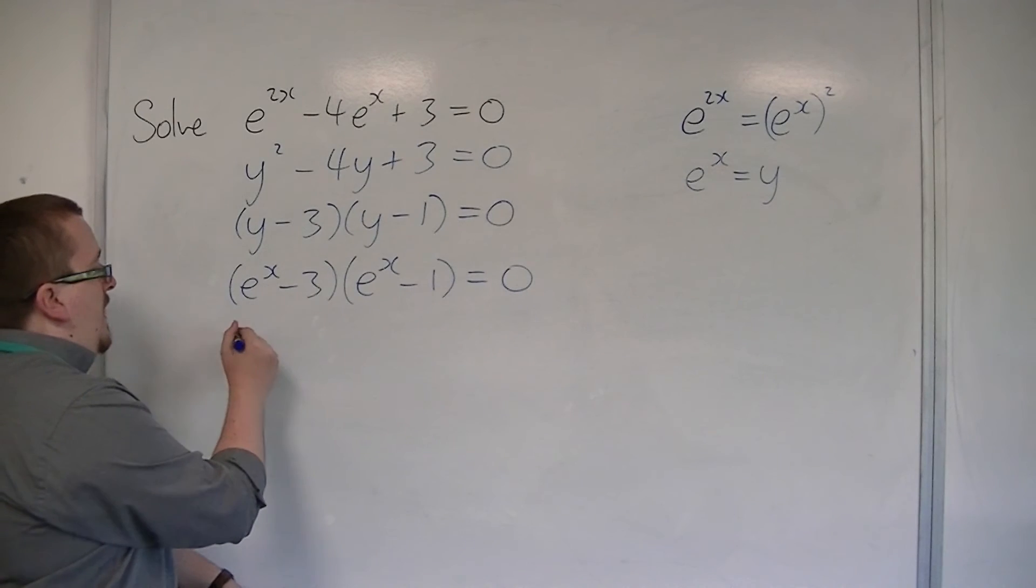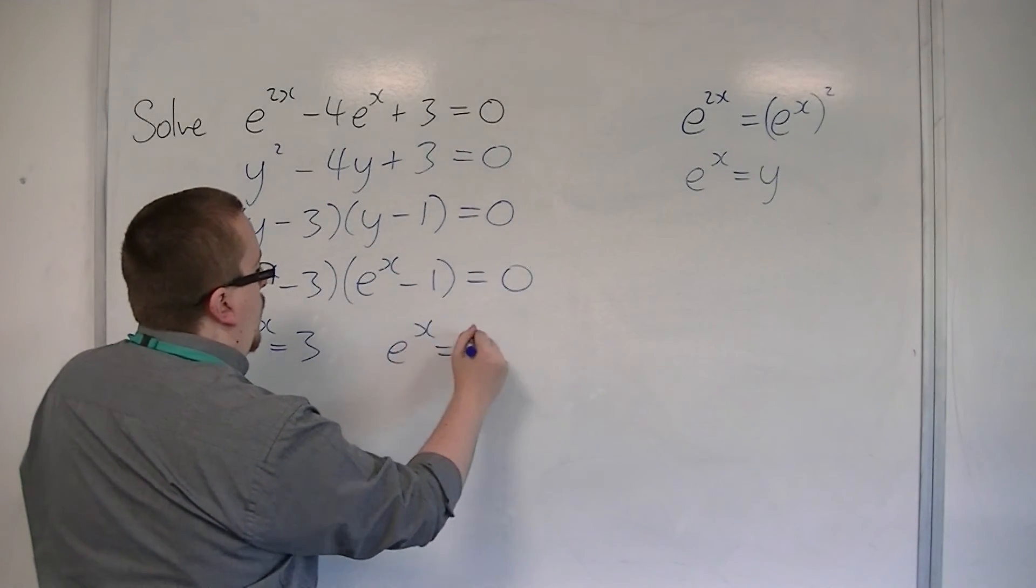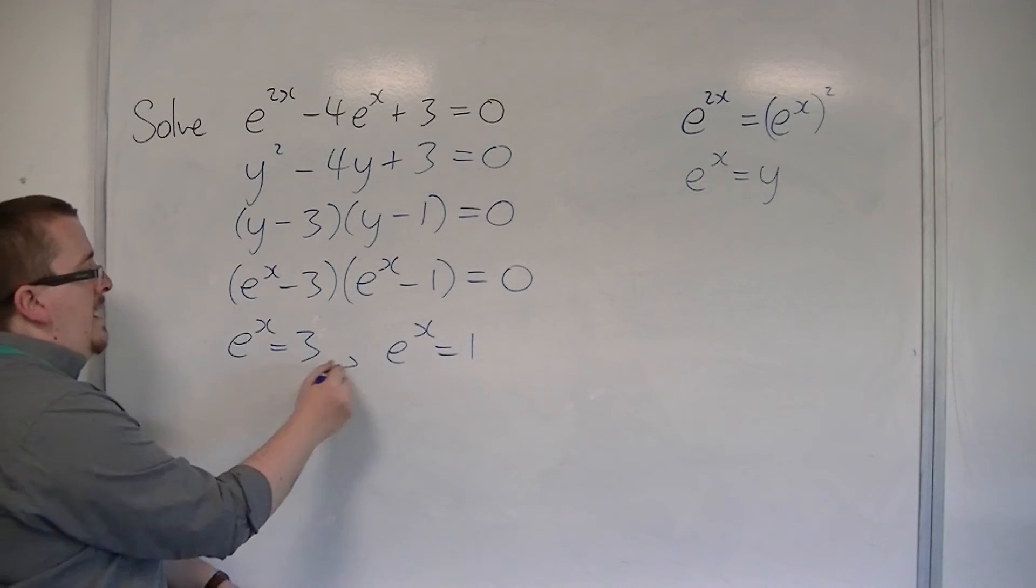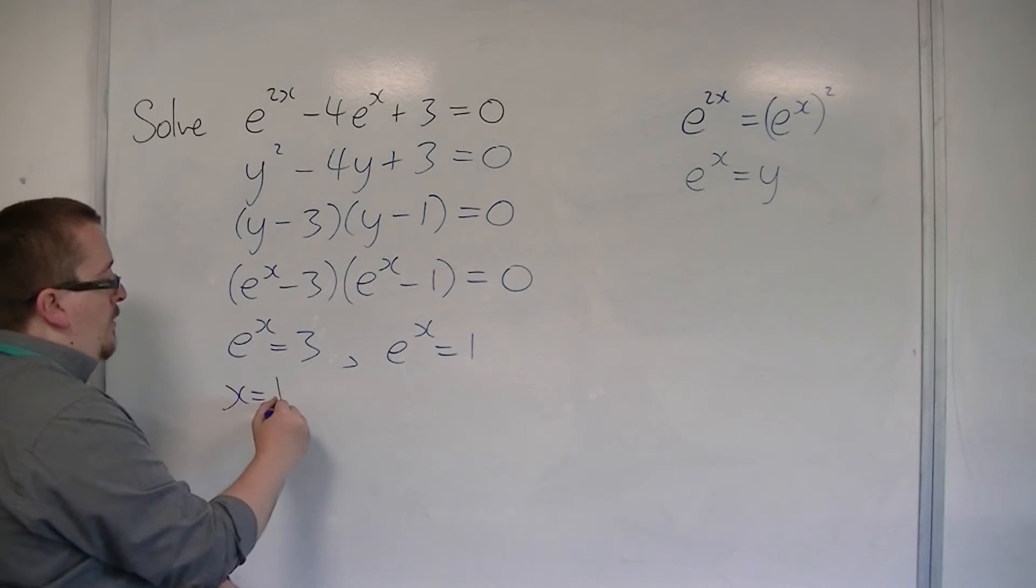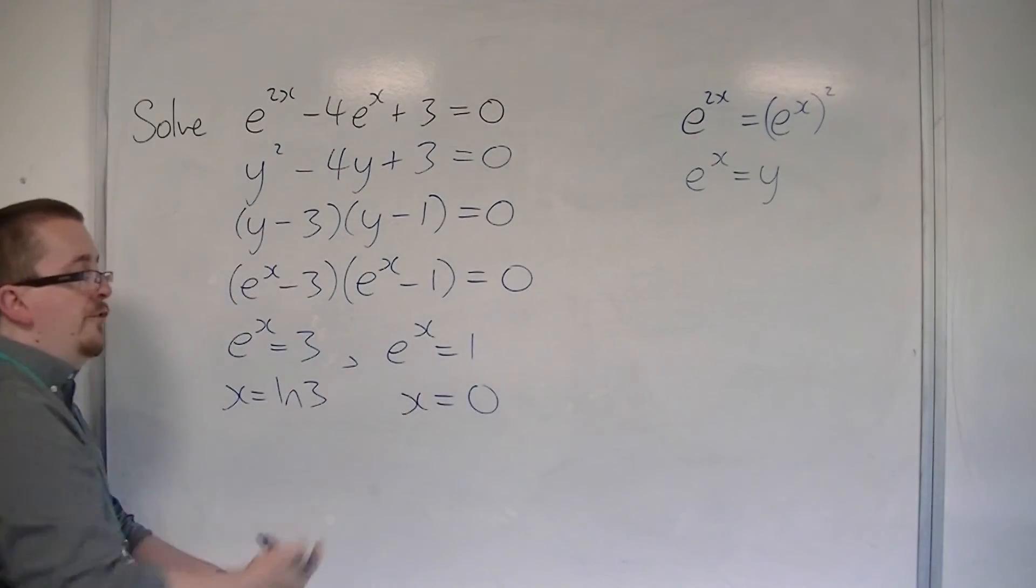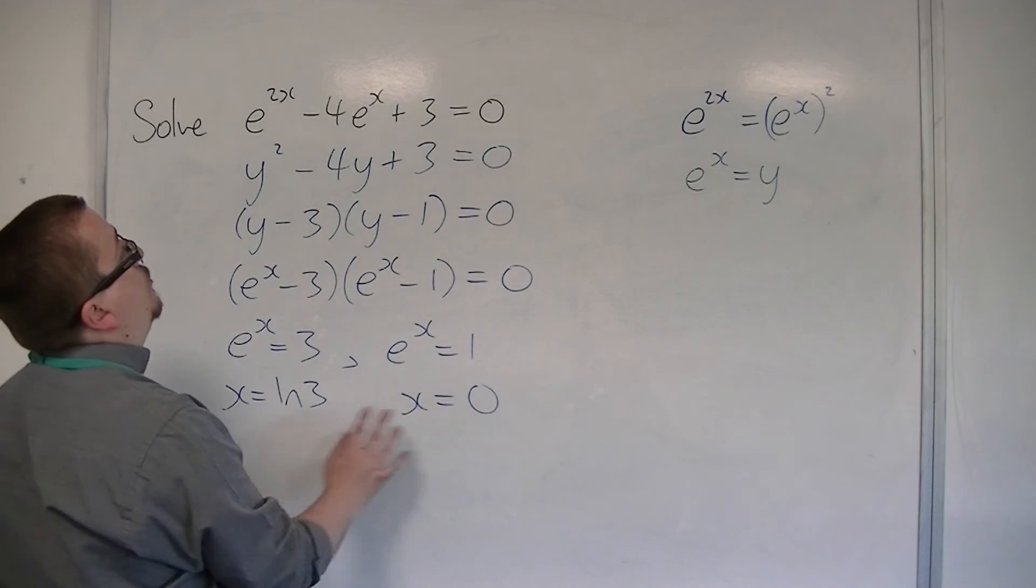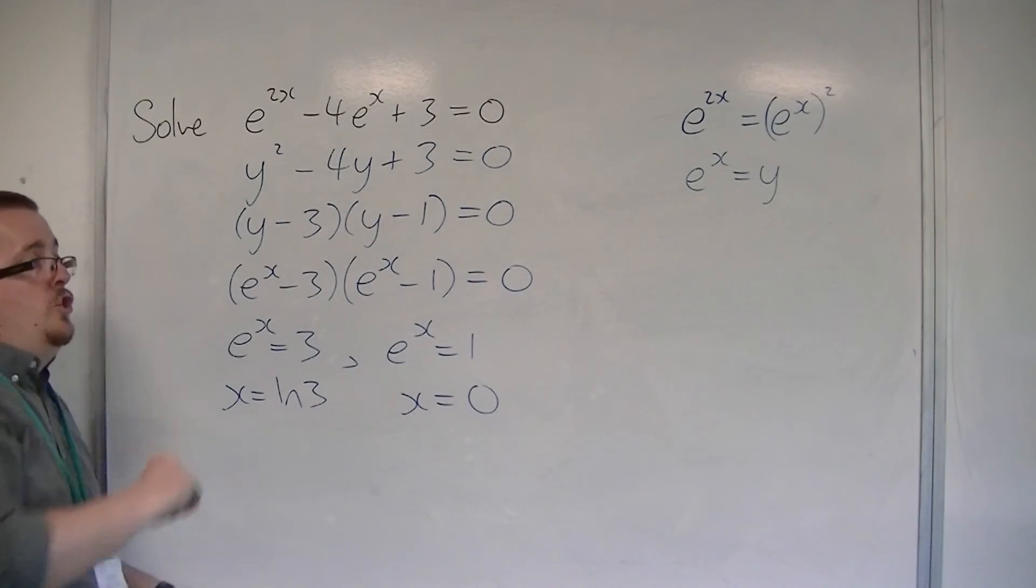So then we either have e to the x is equal to 3 or e to the x is equal to 1, which means that x would have to be log 3 or x would have to be 0. And so they are the two solutions to the original problem.